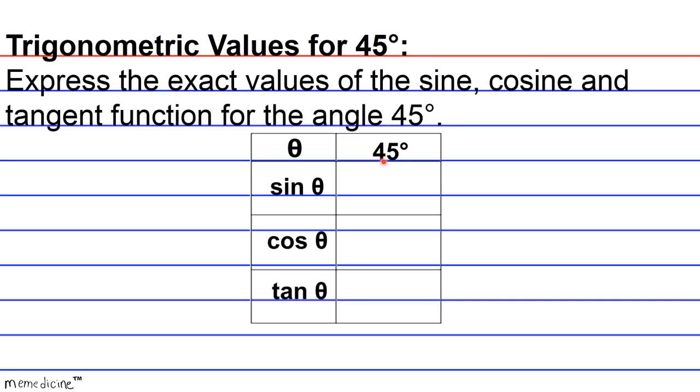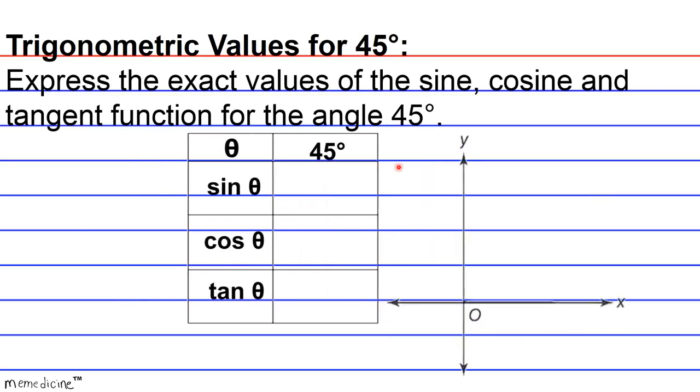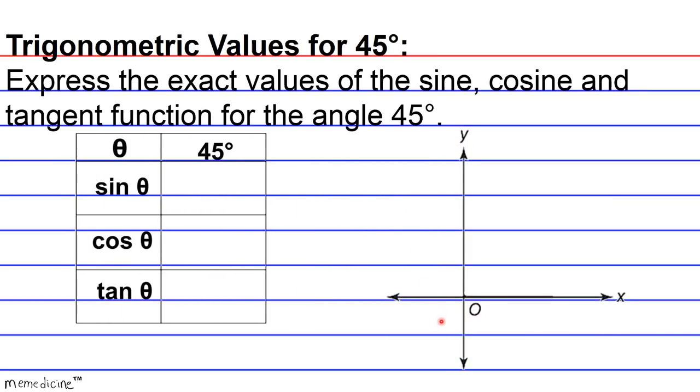Before expressing the trigonometric values for 45 degrees, we need to understand the concept of standard position. And doing this is going to simplify finding all the trigonometric values. Because 45 degrees is an angle in standard position, specifically located in quadrant one, it's going to have about six to seven key features. First of all, its vertex is located at the origin. And the origin has the x, y coordinate points, zero, zero.